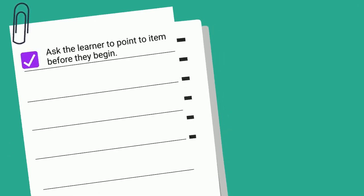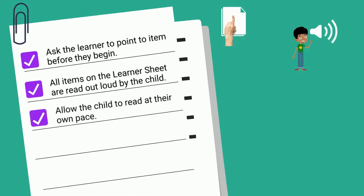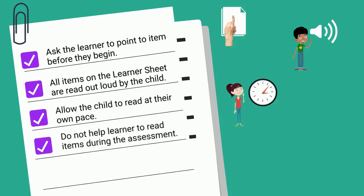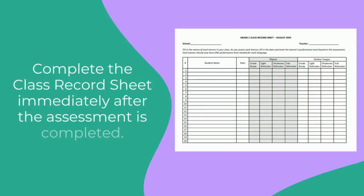Here are general guidelines to follow. Ask the child to point to the first item in the box before they begin. Allow the child to read each item on the learner sheet out loud at their own pace. Do not help the child read any of the items during the assessment. Write down the child's score once each task is completed. Finally, write down the child's name and result in the class record sheet immediately after each assessment is completed.